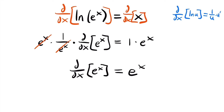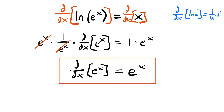We have a very interesting result: the derivative of the exponential function e to the power of x is itself. Now that we have this derivative rule, let's look at some examples.